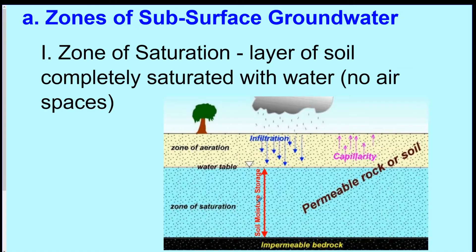There are a couple of different zones with fancy names, but they're pretty easy to understand. The first is called the zone of saturation — this is all the dirt underneath the ground that's full of water. Generally there are three zones. The first one down at the bottom is impermeable bedrock.